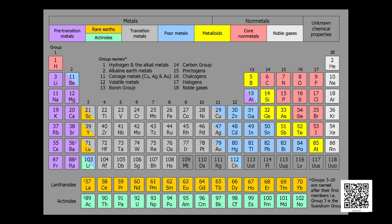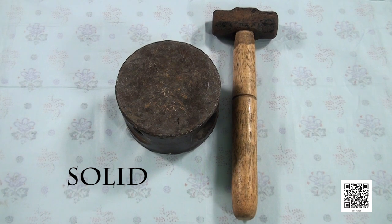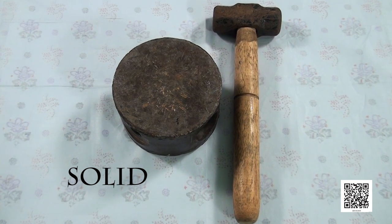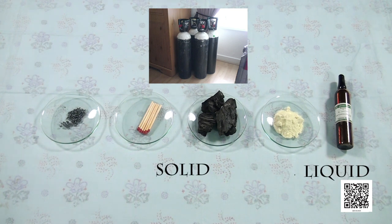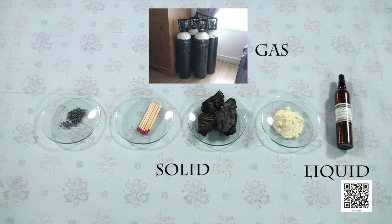Of 118 elements known today, 95 are metals, 22 are non-metals and the rest are metalloids. Generally, metals represent themselves as solids. Non-metals are capable of existing in all three states of matter — 10 are solids, 1 is liquid, and the remaining 11 are gases. With this background information, let us proceed further to discuss the physical properties of metals and non-metals.